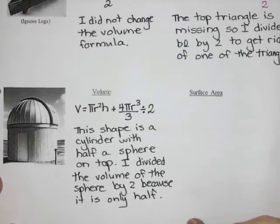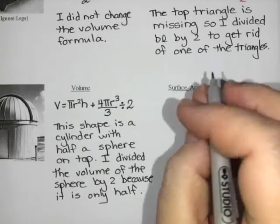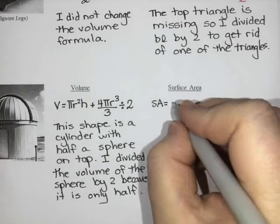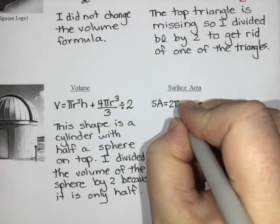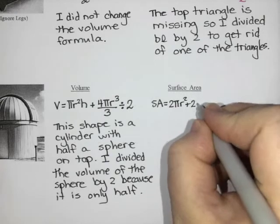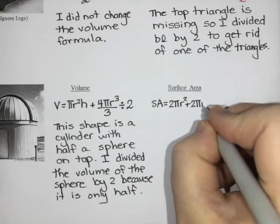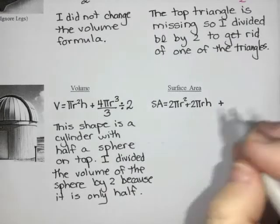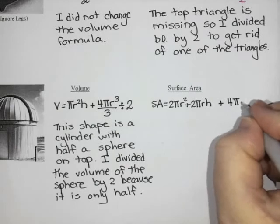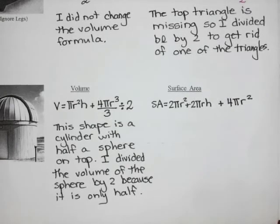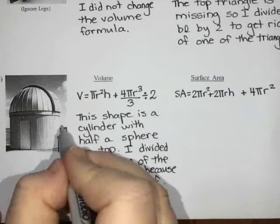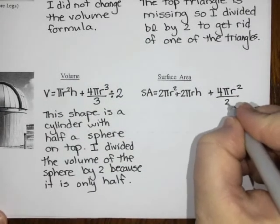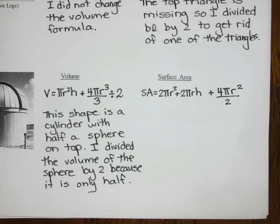For the surface area, the surface area of a cylinder is two pi r squared, that's the top and the bottom, plus two pi r h, which is the lateral area or the side. And then the one for a sphere is four pi r squared. When I look at the picture, this is not a whole sphere, it's only half of a sphere. So I need to take the four pi r squared and divide that by two so that I only get half of that sphere.